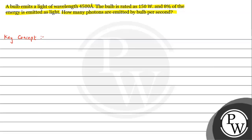Let's suppose we have a source of light — for example, a torch. In this torch, light is emitted in the form of particles. In that situation we can see that these particles can be termed as photons. Photons are energy-carrying packets — they are energy packets.